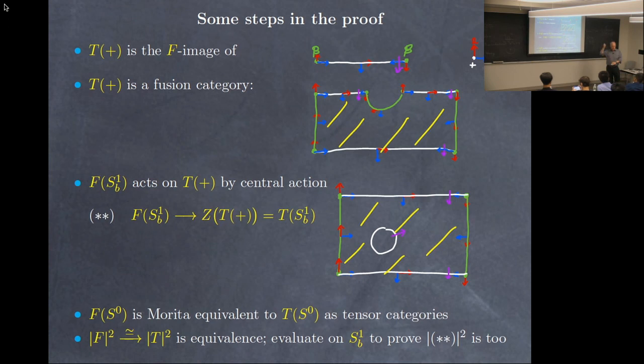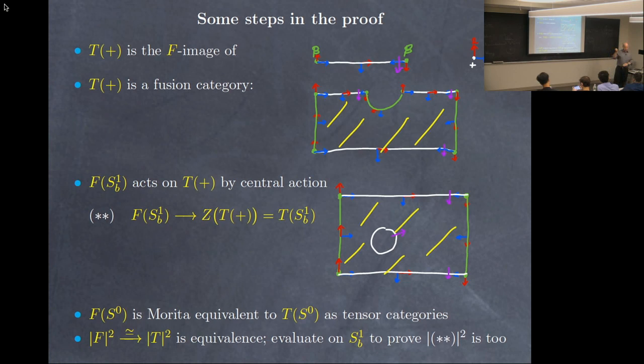The same people and others introduce a Witt group of braided tensor categories precisely to measure whether or not it's a Drinfeld center. Another way to say it is that the class of your modular tensor category in that Witt group is the complete obstruction to having a gapped boundary theory.